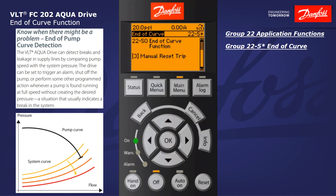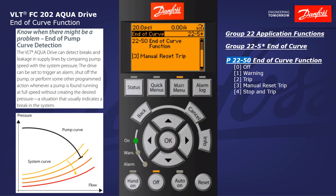The first parameter, 2250, end of curve function, determines how the drive reacts in the event an end of curve is detected. We have the values trip and manual reset trip. These are both trip type functions that will generate an alarm — anytime the drive trips it immediately disables the output, the motor will coast to a stop, and an alarm will be displayed.